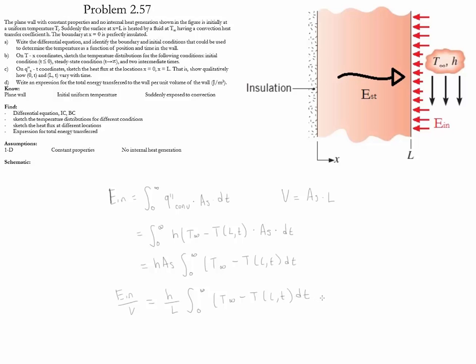This is the expression for the total energy transfer into the wall per unit volume. To solve this integral, you need the exact temperature profile, substitute it into the integral, and evaluate it to get a proper value. Please go over all the steps of this problem to make sure you can derive the differential equation, boundary conditions, and initial conditions, and that you understand how the sketches and this expression were obtained.